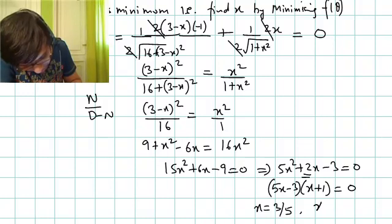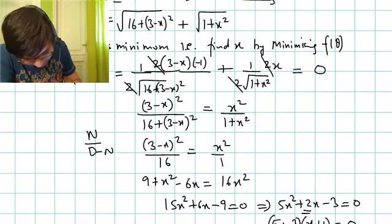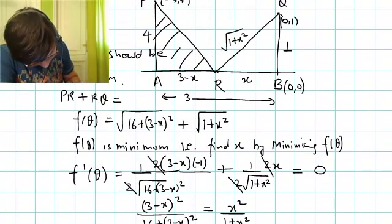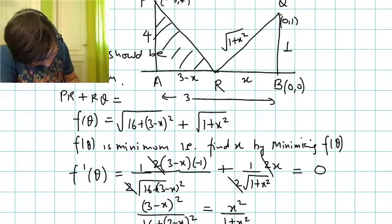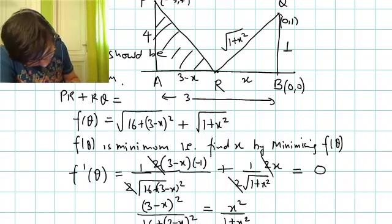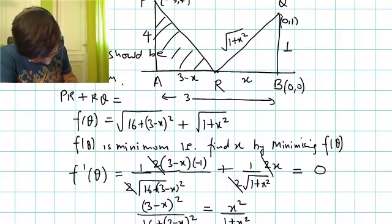Negative value is not possible because x is representing distance. Actually, negative value can also be taken because it means distance measured in opposite direction. So I've done a mistake here. It's (5x+3)(x-1) = 0. So 15x² + 6x - 9, using splitting the middle term: 5x² + 5x - 3x - 3 = 0. So (x+1) and (5x-3), this is fine. x = 3/5.